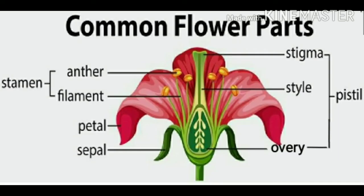To start with this topic, kids you will need to know about the parts of a flower. First, the pistil. The pistil is considered the female part of a flower because it produces seeds.